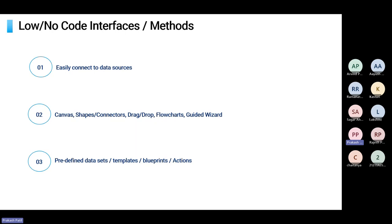With low and no-code interfaces, there are some common interface methods. First, they are capable of connecting to data sources — from Excel or databases to systems such as Salesforce or ServiceNow. Second, they have a canvas interface with shapes and connectors where users interact with drag-and-drop capabilities, flowcharts, and guided wizards that walk the user through creating an app. And lastly, most apps come with predefined datasets, templates, blueprints, and actions so a user doesn't have to create everything from scratch.